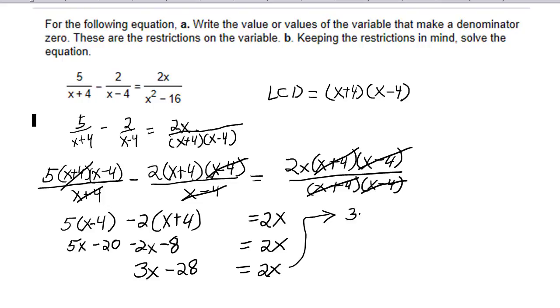So, what I have right now is 3x minus 28 equals 2x. I'm going to subtract 3x from both sides of the equation. That leaves me with negative 28. Don't lose your minus sign.